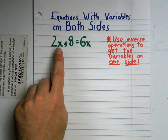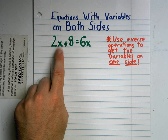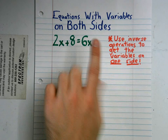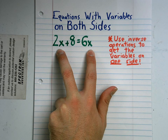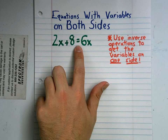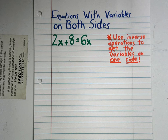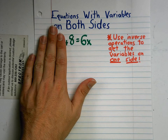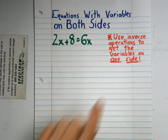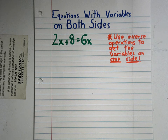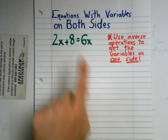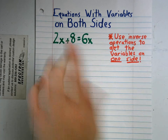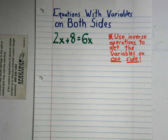Usually we just have a number multiplied or subtracted to the x on one side and then maybe another number on the other side of the equal sign. But this time we have variables, in this case x's, on both sides of the equal sign. This isn't any different than if we only had it on one side. We're going to use inverse operations to get the variables only on one side of the equation — all the variable terms on one side and all the constants, the numbers without variables, on the other side.